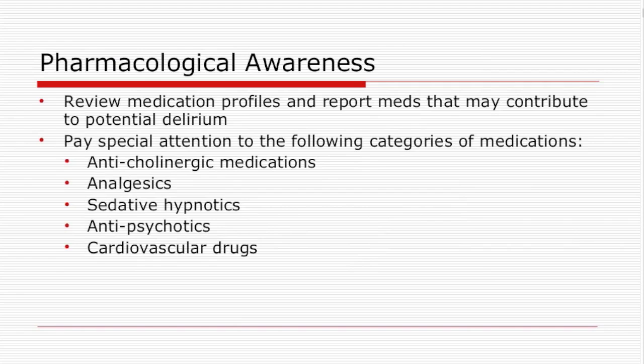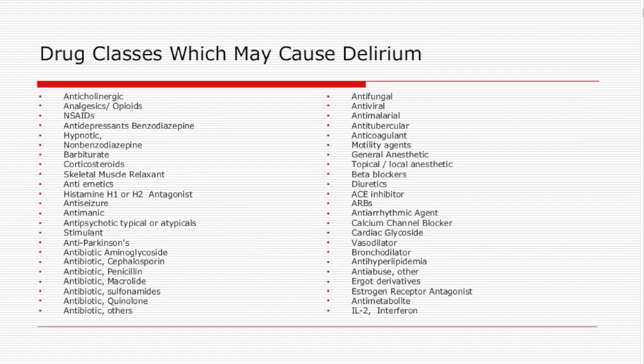Medications are one of the biggest contributors to delirium — in orthopedic surgical patients, 40% can develop delirium, and at least 50% of those may have delirium secondary to medications. Certain classes of medications are considered high-risk for precipitating delirium. Anticholinergic medications carry the biggest risk. Delirium as an entity involves increased anticholinergic activity in the brain. Acetylcholine is a neurotransmitter that helps increase concentration and enhance memory, while anticholinergic activity decreases concentration and memory retention.